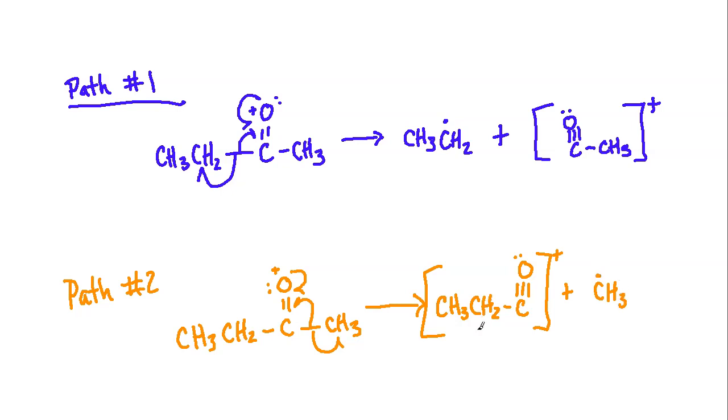Now one point I want to bring up here, because we do have two different pathways, you do want to consider the stability of the radicals that are being left behind. In general, radicals follow the same stability as carbocations, which means that a methyl radical is less likely than a primary radical, which will be less likely than a secondary radical, and so on. So just keep that in mind in terms of which path may be preferred. And that's based on stability, hyperconjugation, a couple different effects that I've talked about on the channel before.